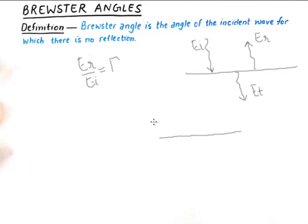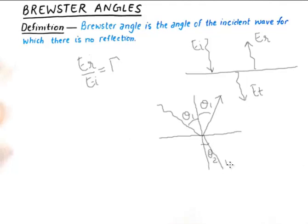Furthermore, reflection coefficient can also be understood in context with a wave which is incident at some angle — that angle is measured with the normal. Some part of the wave will be reflected back and some of it will be transmitted, making an angle theta two. So if this transmitted wave deviates its angle, that is known as refraction, and this part is known as reflection. Brewster Angle is the angle of the incident wave for which there is no reflection — we want to do away with the reflected part. So what will be the angle at which we should send our incident wave so that there is no reflection? This is what the definition of Brewster Angle is.